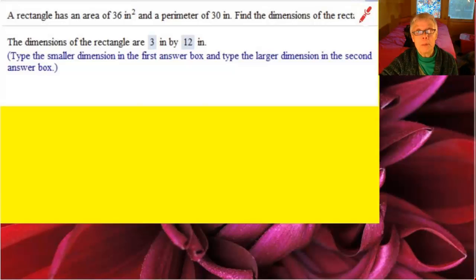Here's the problem. A rectangle has an area of 36 square inches and a perimeter of 30 inches. Find the dimensions of the rectangle.